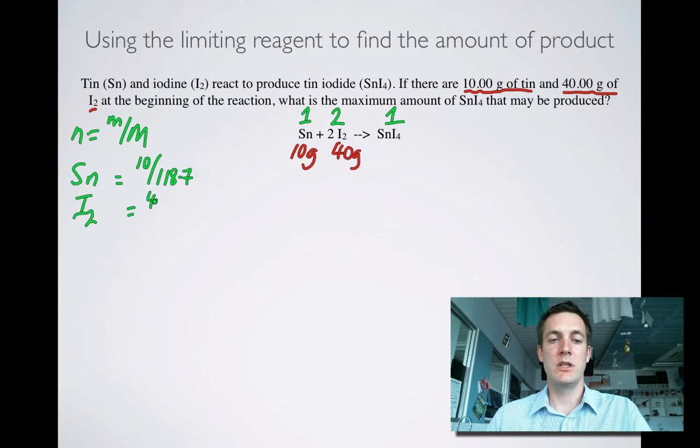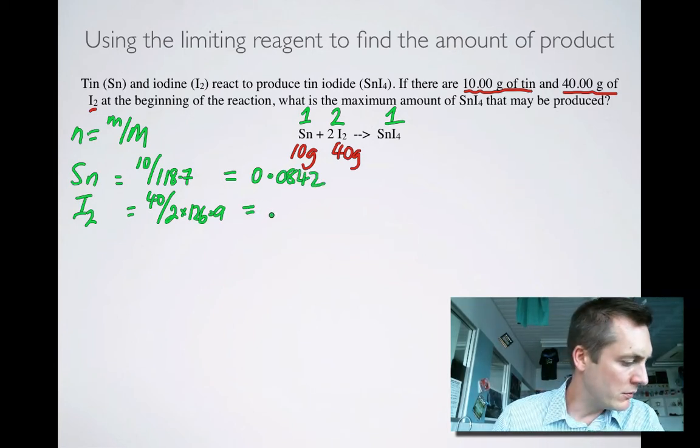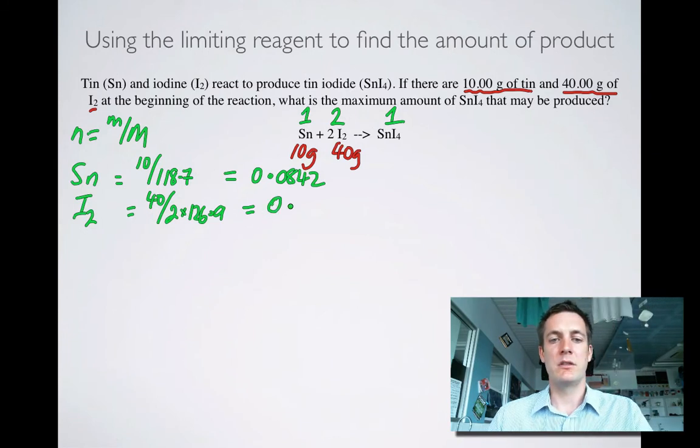Okay, and that is going to be 40 over 2 times 126.9. And if I remember rightly, those two numbers are 0.0842, and I don't remember that one, 0.158. Okay, to three significant figures.